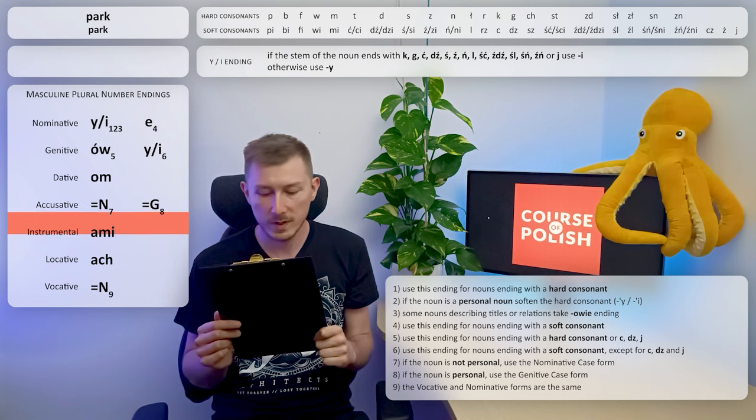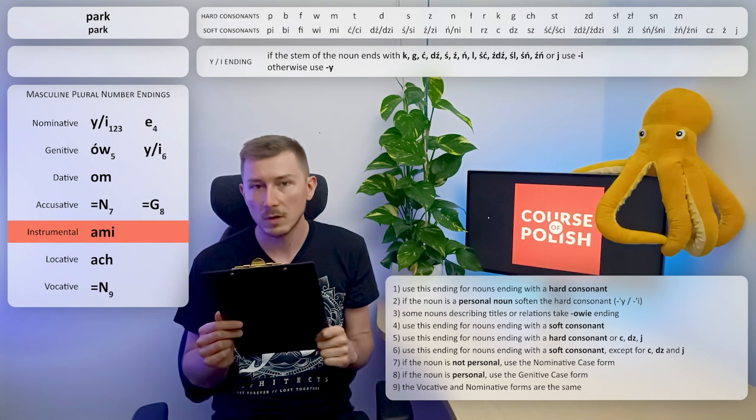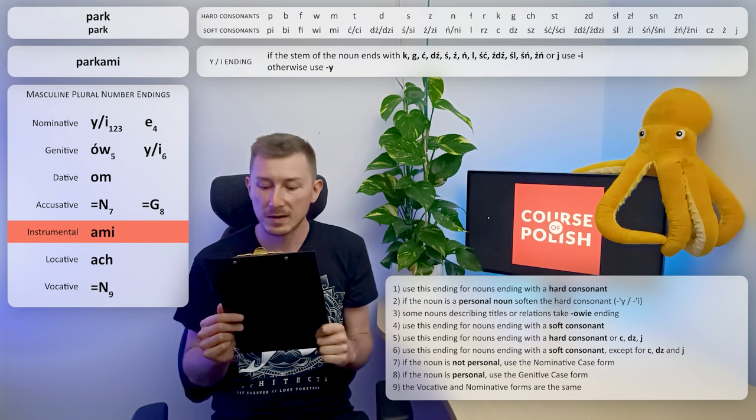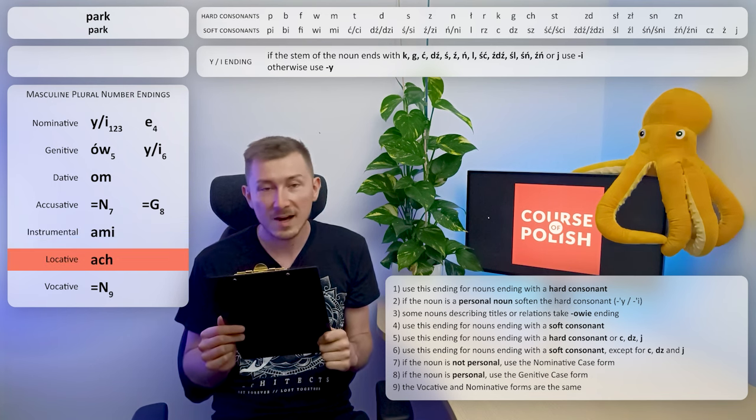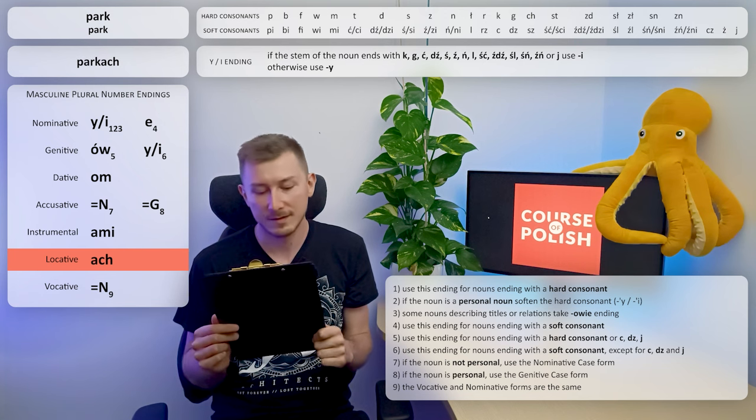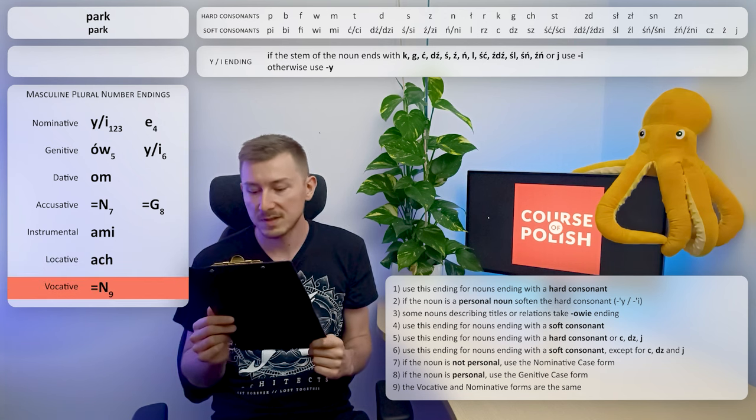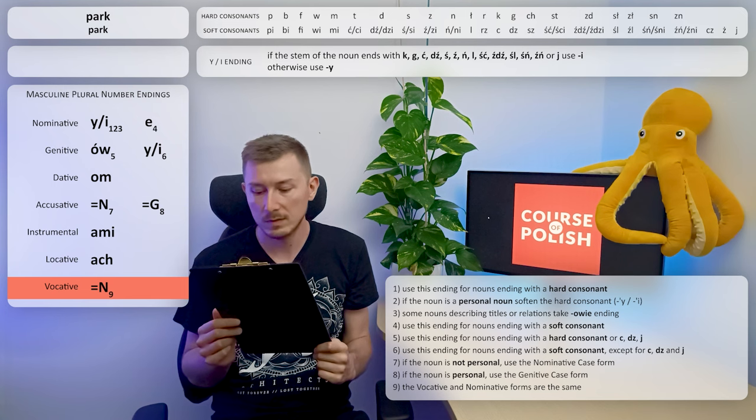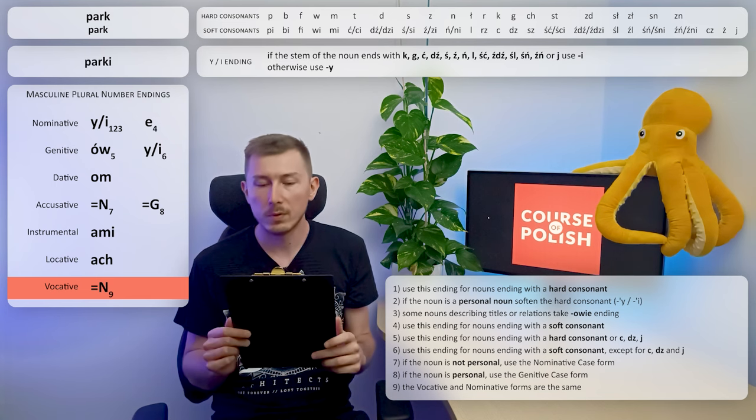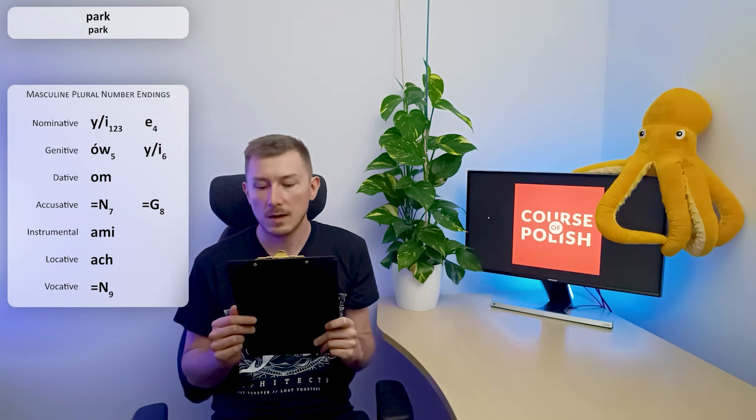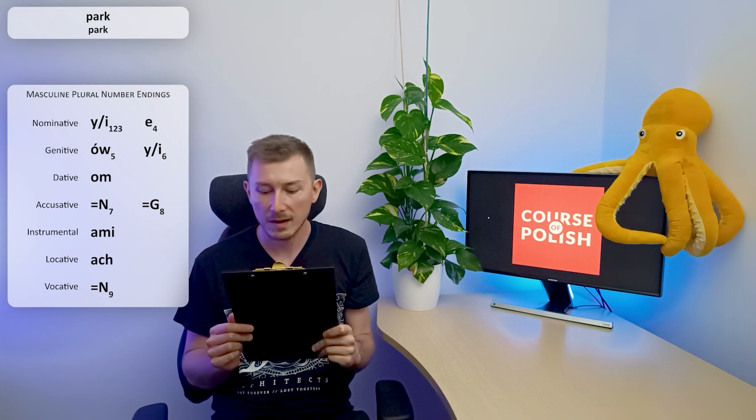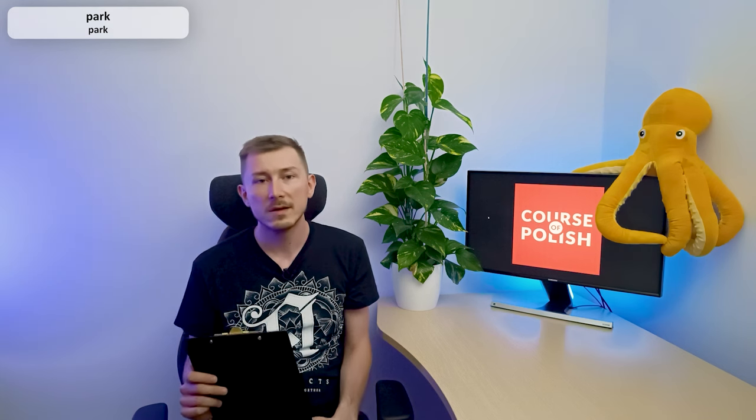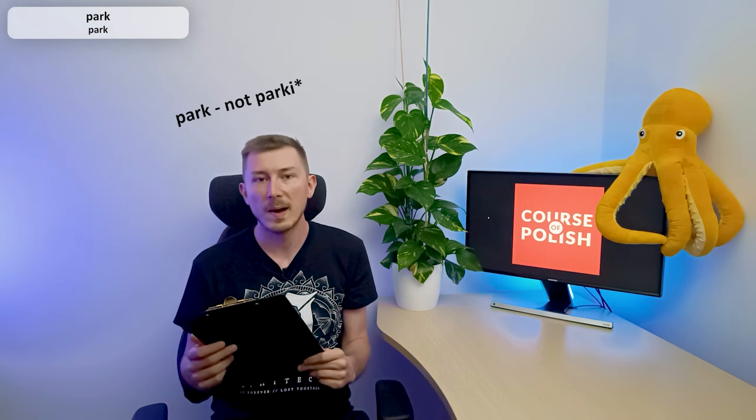Next case, instrumental. Here we have just one option: AMI. So the form is PARKAMI. Same with locative, just one option: ACH. So the form will be PARKACH. And vocative, it's the same as nominative. So the form is PARKI. So all the plural forms are like this: PARKI, PARKÓW, PARKOM, PARKI, PARKAMI, PARKACH, PARKI.